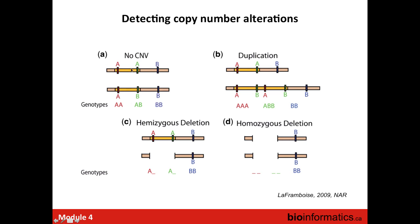When we have a hemizygous deletion—deleting just one copy—we lose heterozygosity at that position, and we're left with A and A. In the case of homozygous deletions, we lose both alleles. Another pattern marking tumor suppressor genes is copy-neutral loss of heterozygosity, often coupled with a somatic mutation. Typically there's a loss-of-function mutation in one allele of a tumor suppressor, and then the tumor gets rid of the other copy through a process like non-disjunction—an error in mitotic division—followed by duplication of the mutated allele, giving two copies of the mutated tumor suppressor gene.